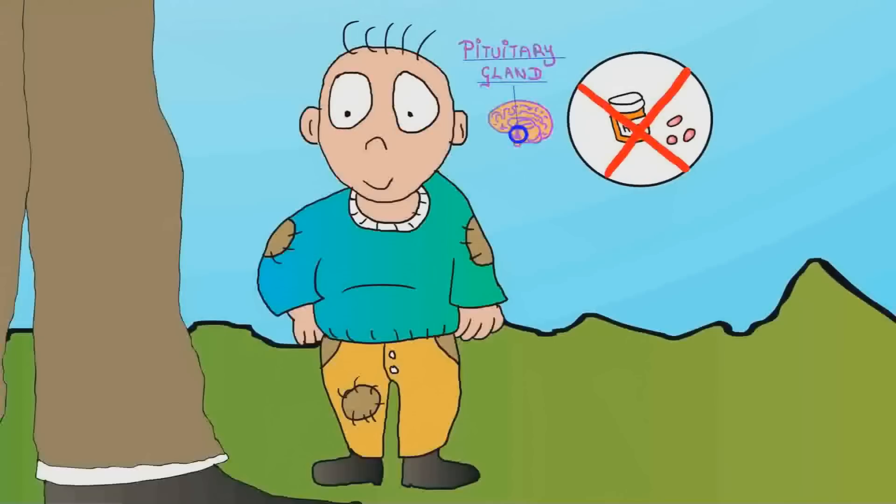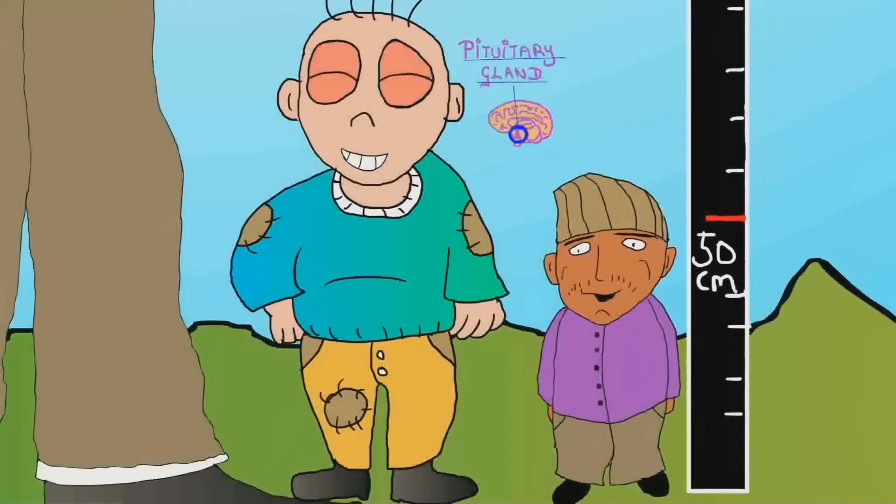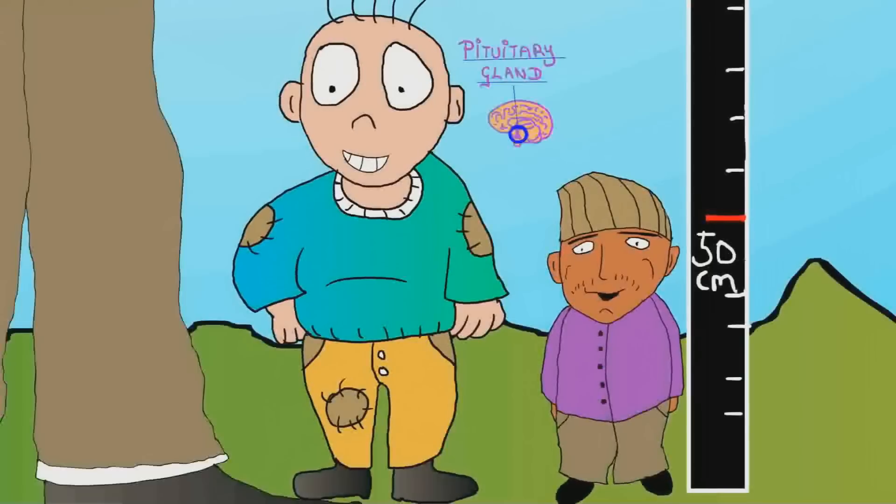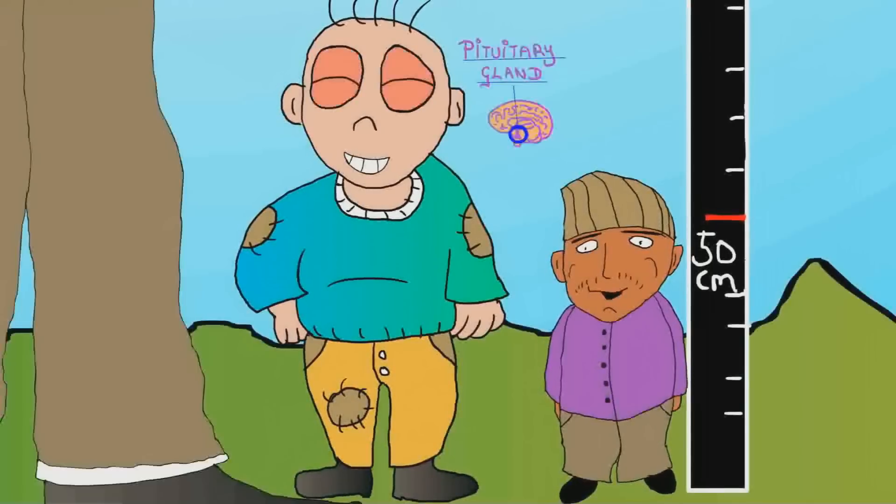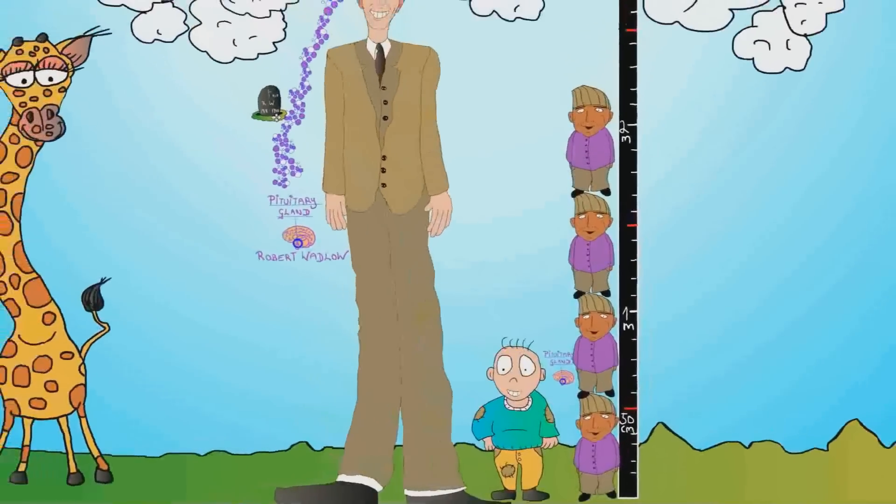The shortest man in the world is Chandra from Nepal with a height of only 1 foot 10 inches. That means that the tallest man in the world was more than five times as tall as the shortest.